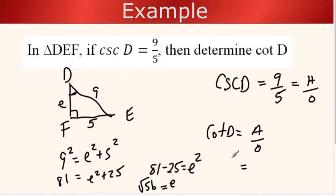The cotangent, let's go over here now. The cotangent of D would be adjacent, which is the square root of 56, over the opposite, which is 5.